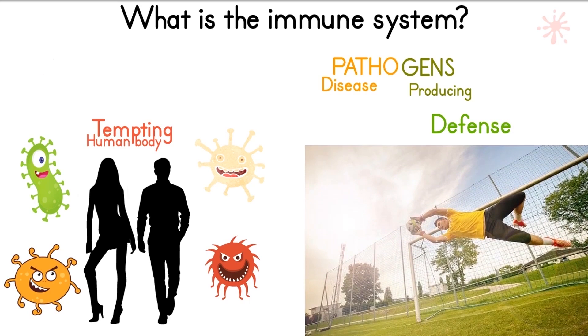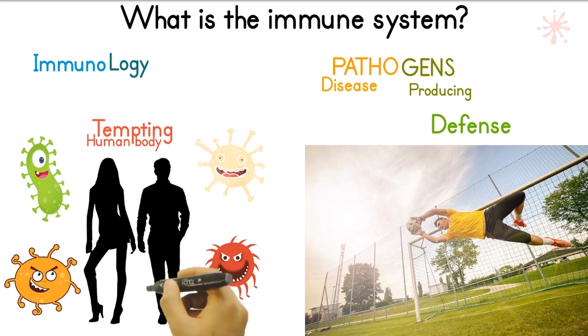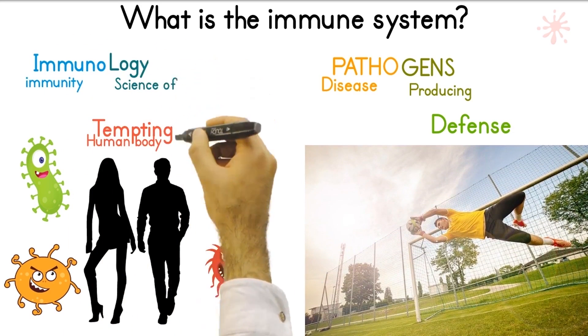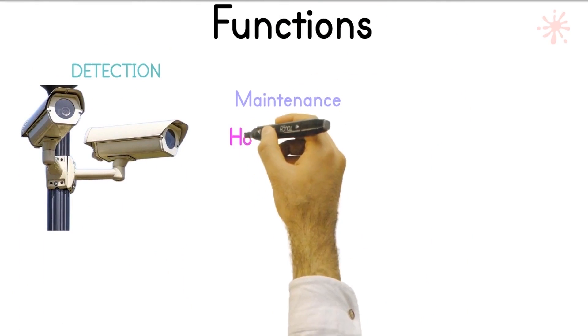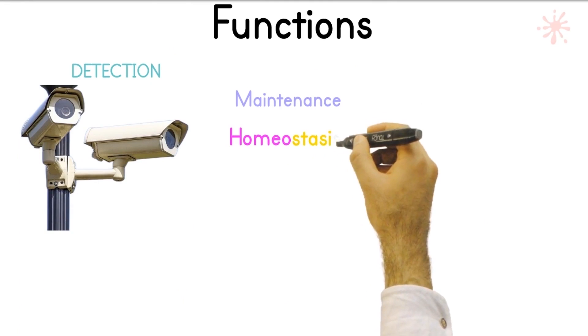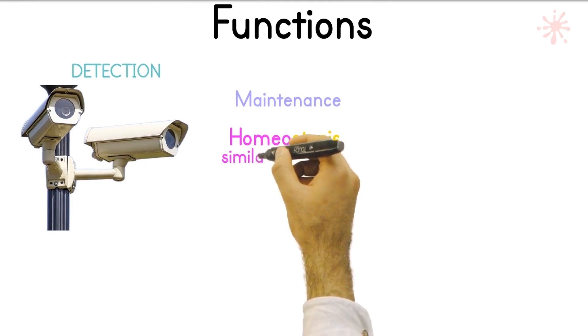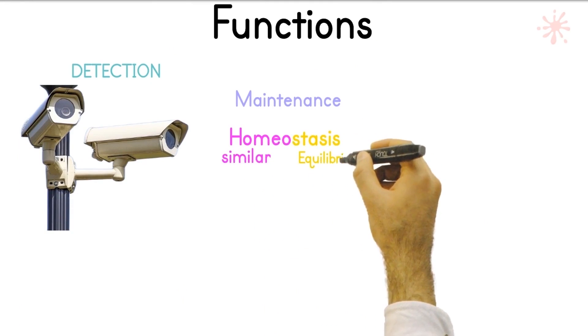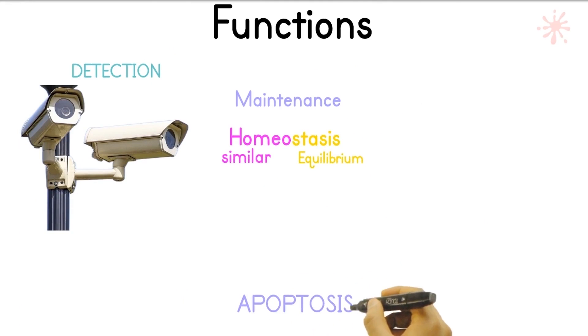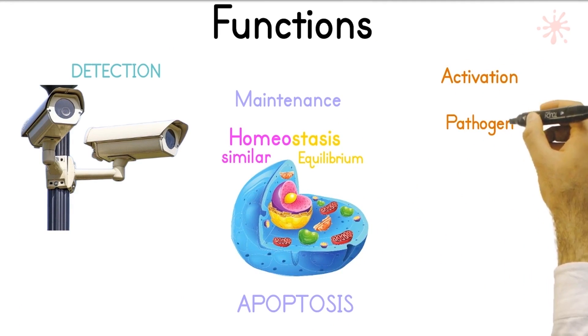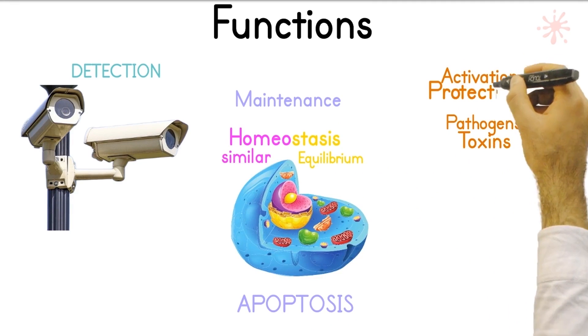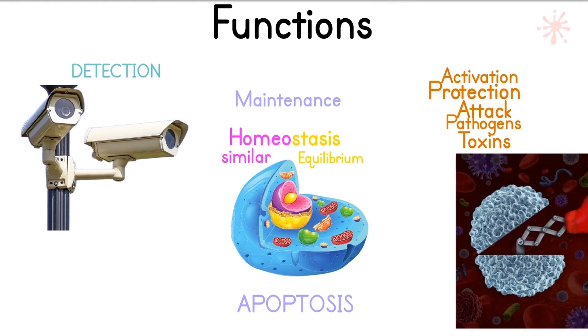The immune system is our defense mechanism. Immunology is the science of the immune system. We recognize three distinct functions: first, detection of abnormal activities; second, maintaining homeostasis by eliminating non-functional tissues through apoptosis, which is programmed cell death; and third, protection through the activation of specific and non-specific immunity systems to get rid of invaders.